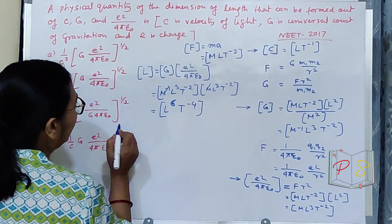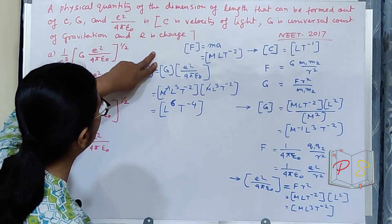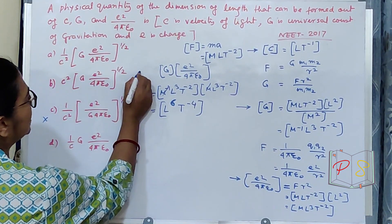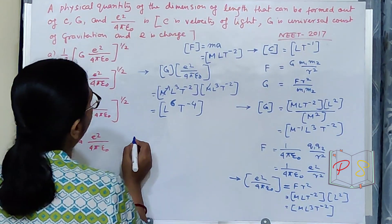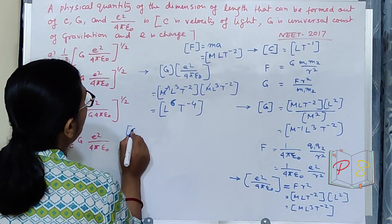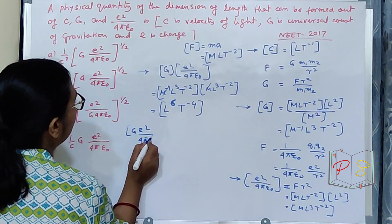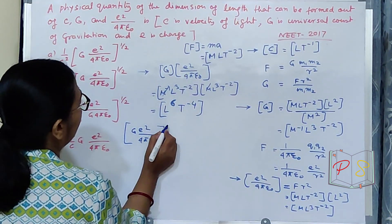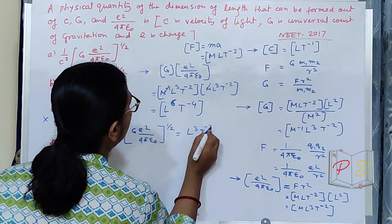What I will do? I am trying to make this. This is my starting point. I am trying to get L. So, if now this is my left hand side, this is my right hand side. Now G E square by 4 pi epsilon naught. If I square root it, I will get L 3 T minus 2.